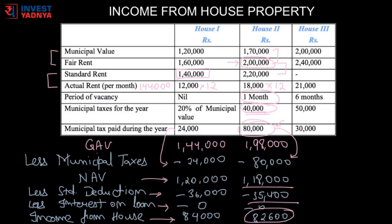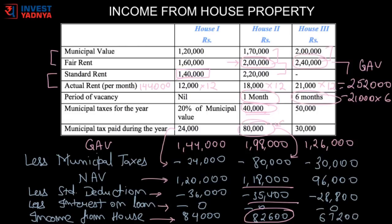Municipal tax is calculated based on actual tax paid and not the actual tax due. So here, even though tax due is Rs 40,000, the person has paid Rs 80,000, and hence this amount will be deducted from gross annual value to get net annual value. After the standard deduction, this will be income from house property. In the third scenario, the property doesn't come under the Rent Control Act, so the ideal rent is the higher of fair rent and municipal value, which is Rs 2,40,000. But actual rent is Rs 21,000 x 12, which is Rs 2,52,000, so it is taken as gross annual value. There is a 6-month loss due to vacancy, so Rs 21,000 x 6 is deducted, making the final GAV Rs 1,26,000. After deducting actual municipal tax paid and standard deduction, this gives income from house property.